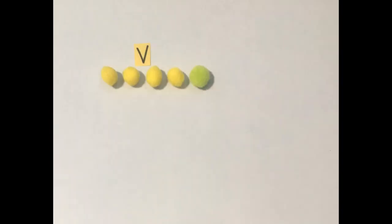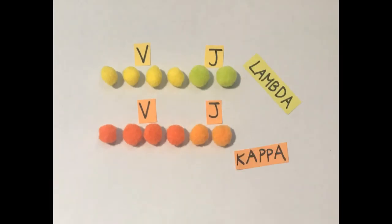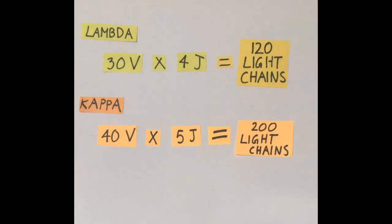Light chain DNA has V and J segments only, and there are also two types of light chains, lambda and kappa chains. Lambda chains can form 120 different light chains, and the kappa can form another 200 light chains.